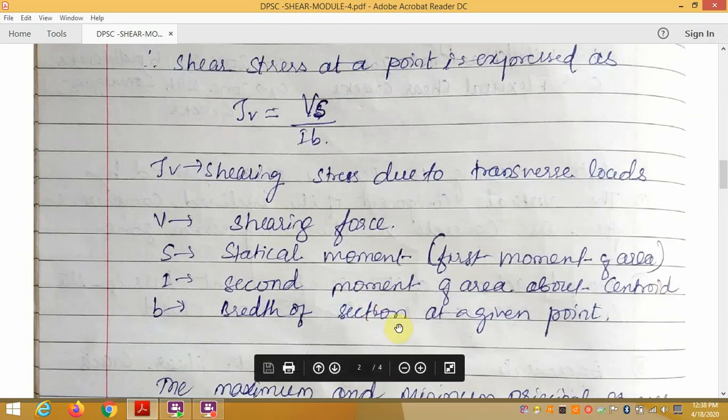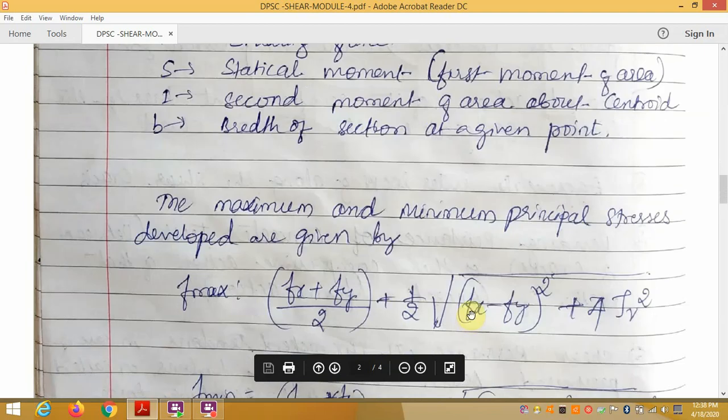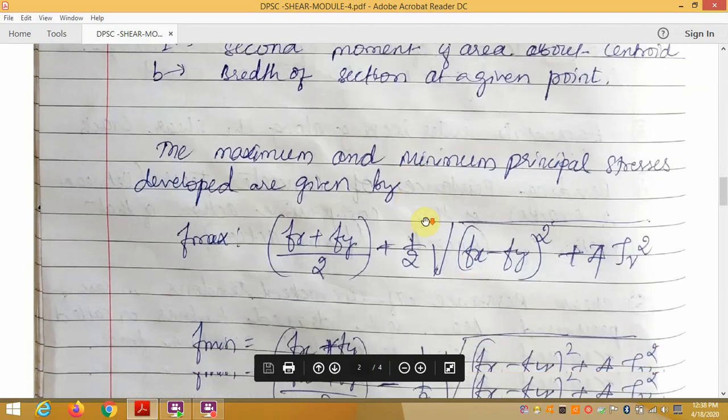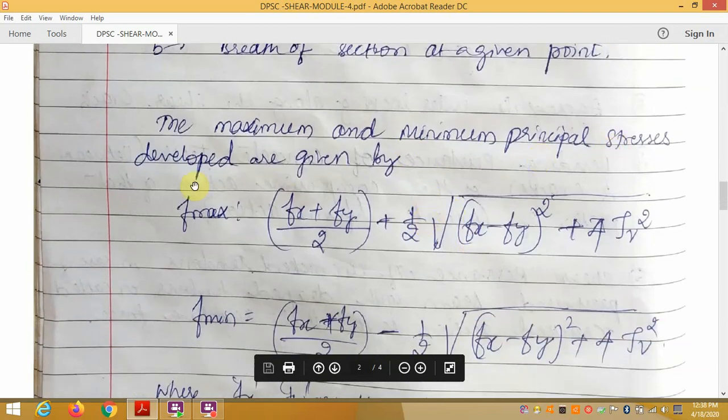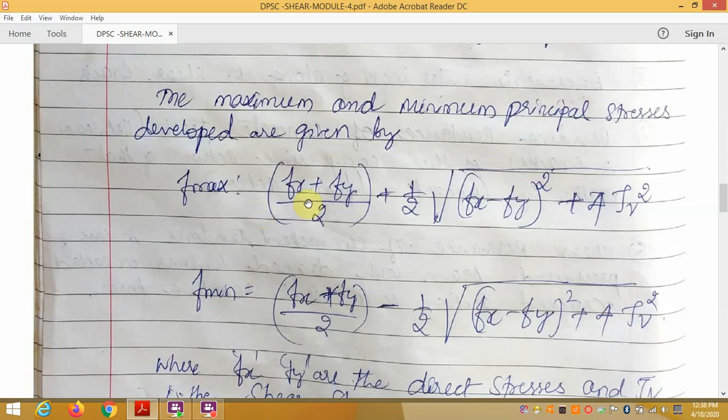B is the breadth of the section at a given point. The maximum and minimum principal stresses developed are given by F max equals Fx plus Fy divided by 2 plus half into root of Fx minus Fy the whole square plus 4 into Tau V square.